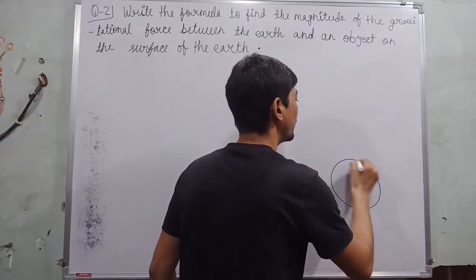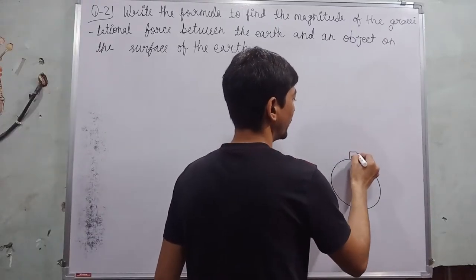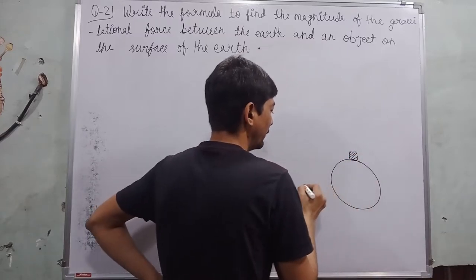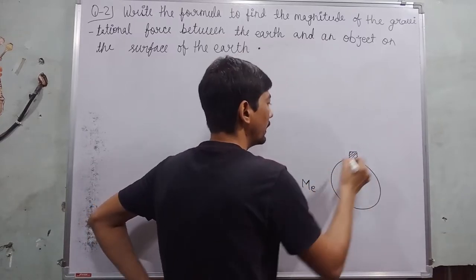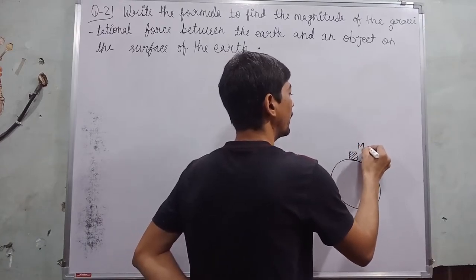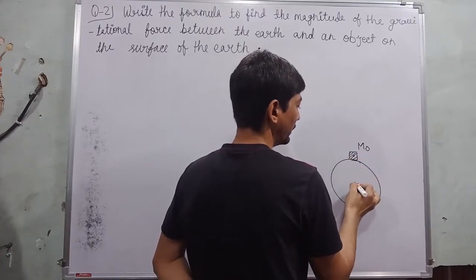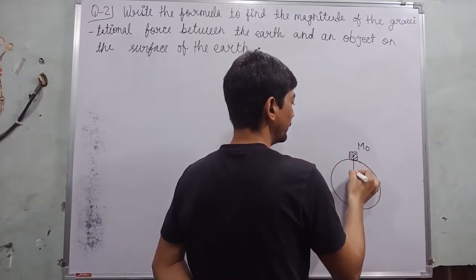Let us suppose this is our Earth and there is some object on the surface of the Earth. The mass of Earth is Me and the mass of the object is Mo. The distance between the center of the object and the center of the Earth is given as small r.